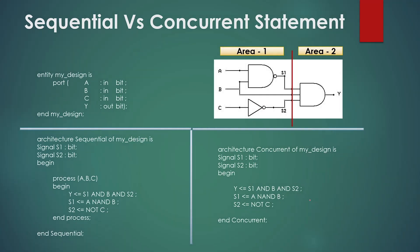Now this is interesting. In this screen the top section is the same, but we changed the sequence of the statements inside the architecture. Now statement 3 becomes statement 1 — meaning the output Y gets the value of logical AND with signals S1, B, and S2 first. Then in the second statement, signal S1 gets the value of the NAND function of inputs A and B. And in the last statement, internal signal S2 gets the value of NOT function of input C. We changed the sequence in both architectures — the sequential one on the left and the concurrent one on the right.